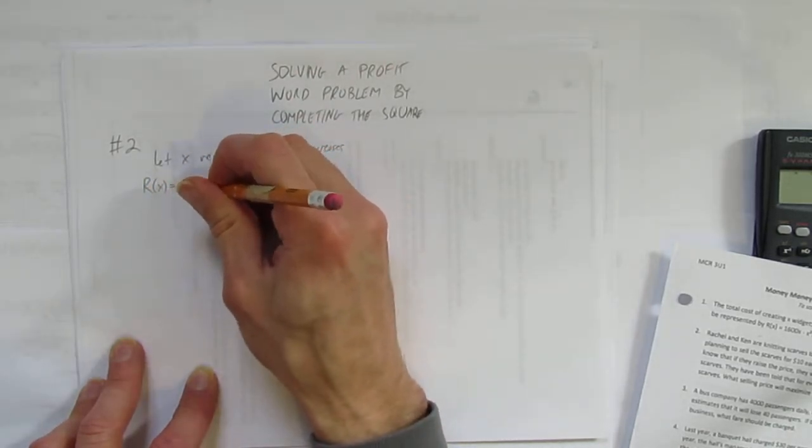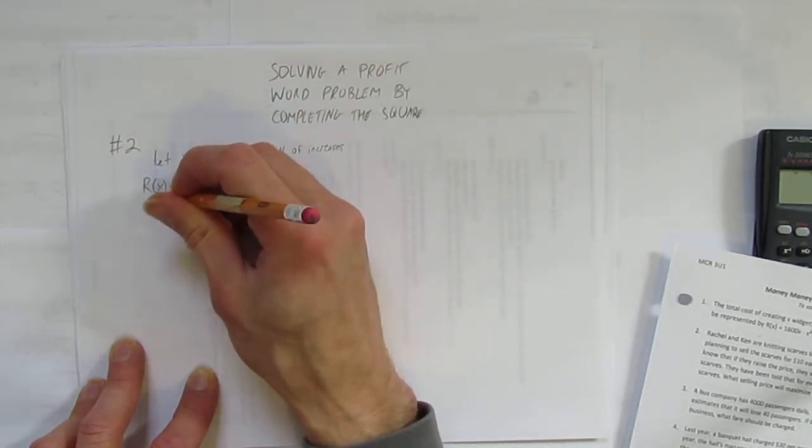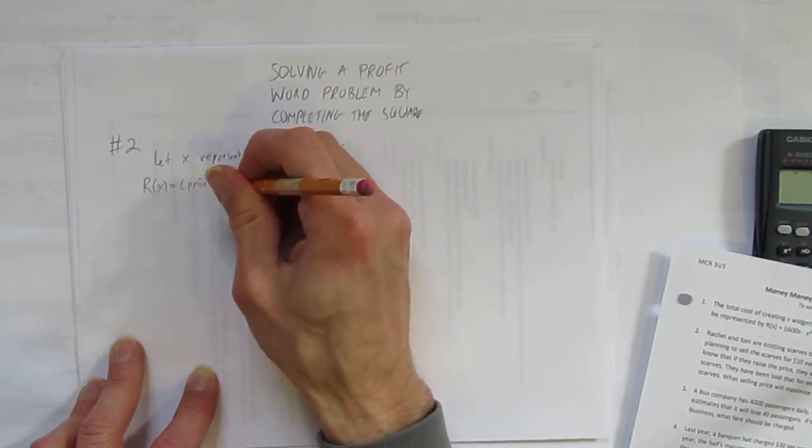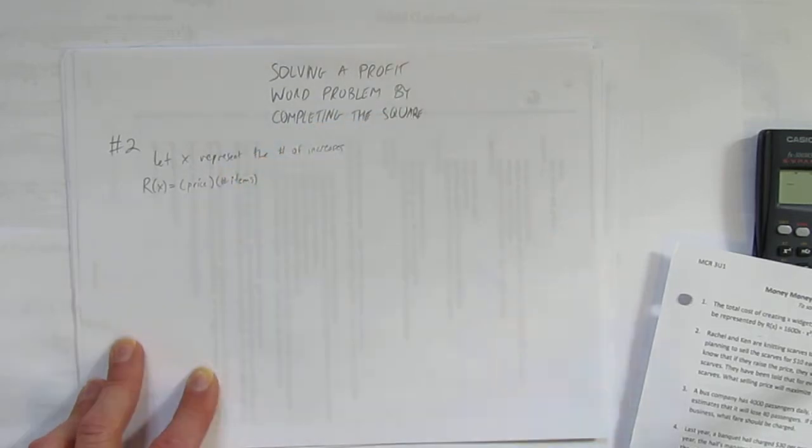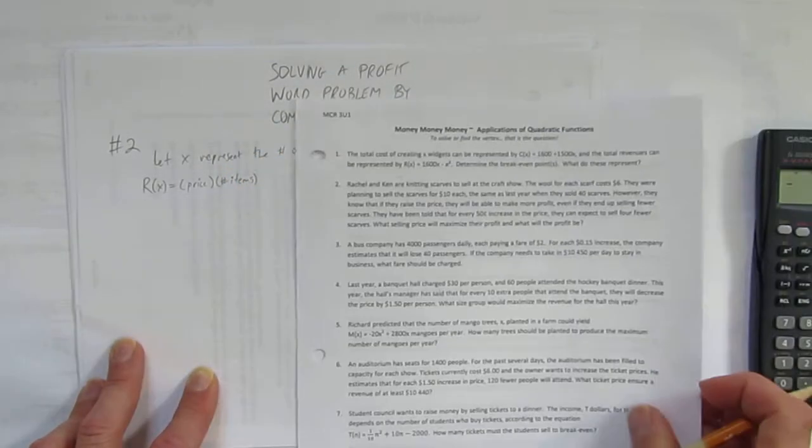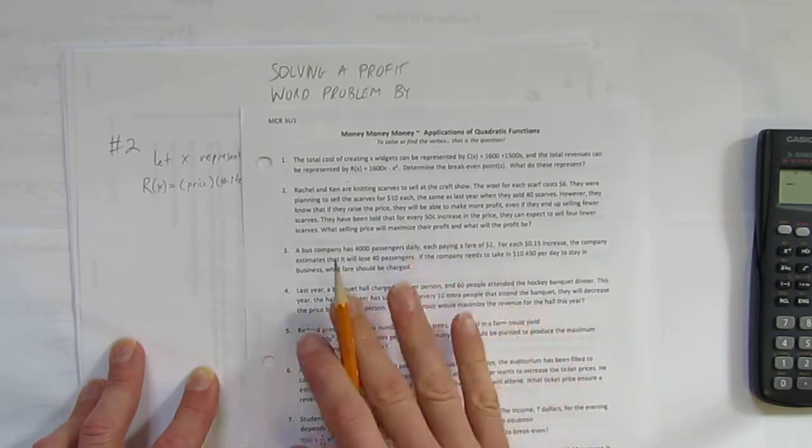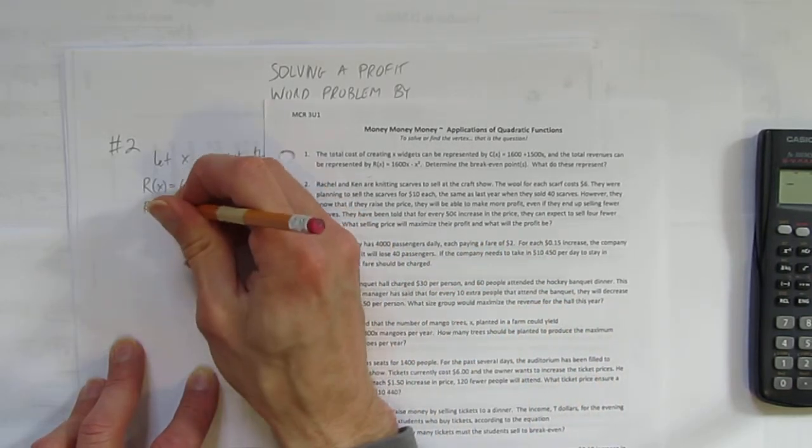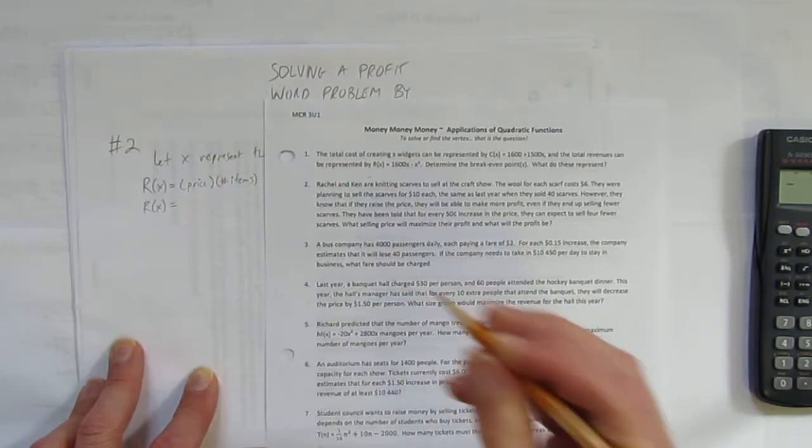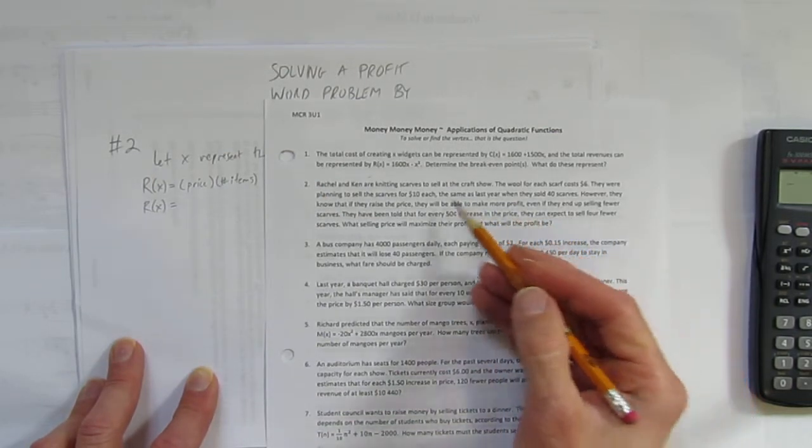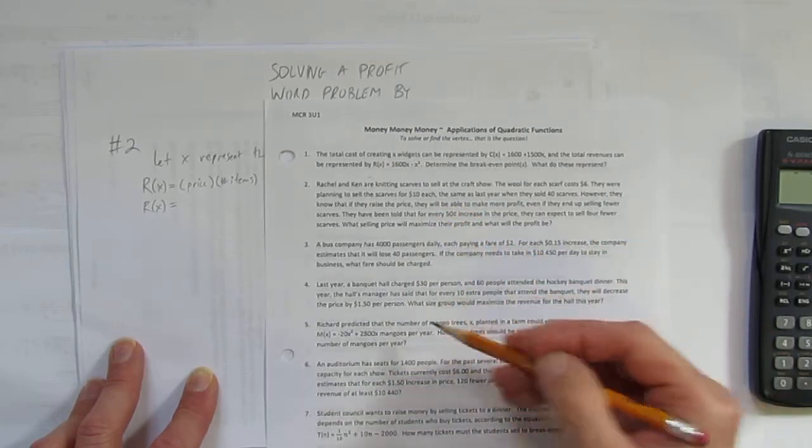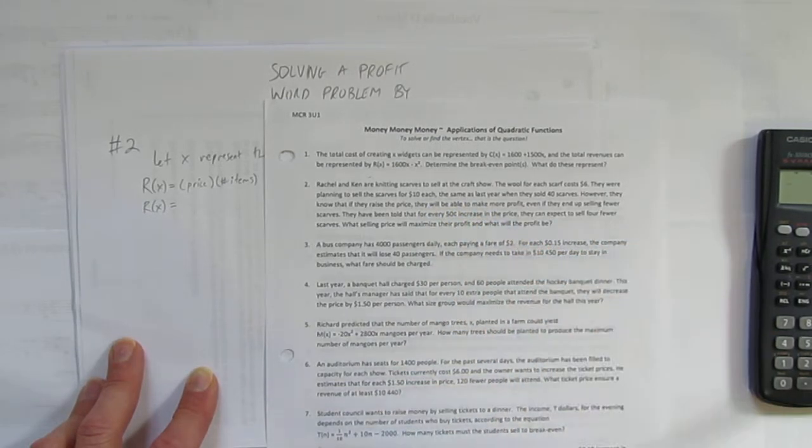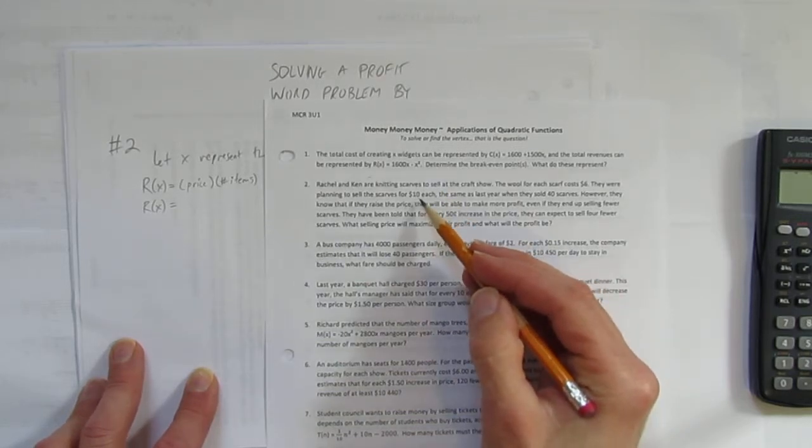Revenue is always, even if you didn't take math, the amount of money you pull in, the revenue is the price times the number of items you sell. That's true even not in a math class. But what's going to be tricky here is taking this word problem and changing it into the equation for revenue. What's the price? Well, let's look through this problem. It's $10.